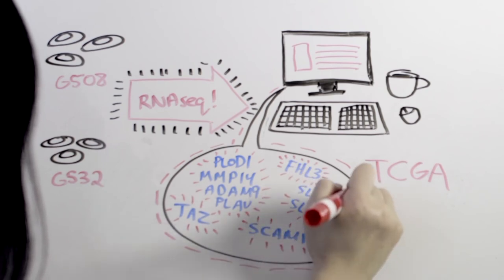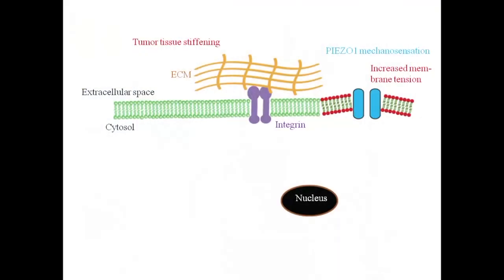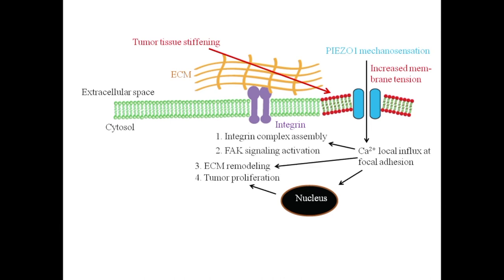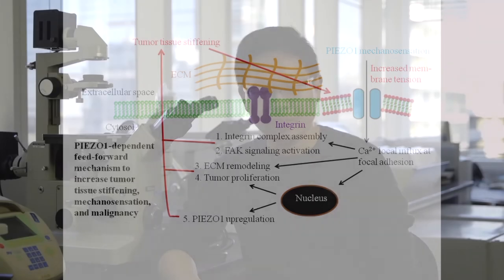These target genes include regulators of ECM remodeling, actin cytoskeleton, and the mechanosensitive Hippo signaling pathway. I'd like to present the model in our work. During disease progression, tumor tissue stiffening provides a favorable mechanical microenvironment to activate PIEZO1, which localizes at various regions of tumor cells including focal adhesions. PIEZO1 regulates the assembly of focal adhesions, activation of integrin focal adhesion signaling, tumor cell proliferation, as well as the expression of a number of genes involved with ECM remodeling. In addition, tissue stiffening in the tumor further increases the mRNA and protein level of PIEZO1, which in turn elevates the mechanosensory and mechanotransduction capacity of the tumor cells. These processes form a reciprocal feed-forward circuit between tumor cell mechanotransduction and aberrant tissue mechanics in glioma to promote malignancy.